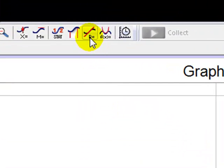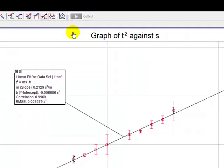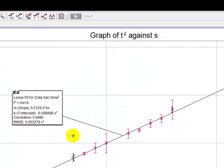To put a line we press the Linear Fit button at the top and that puts a line. And there's the slope and intercept.